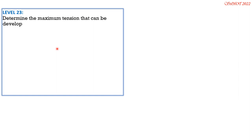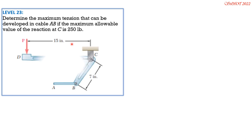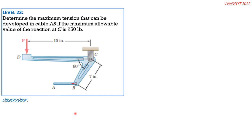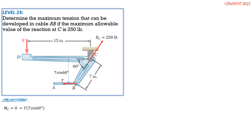Determine the maximum tension that can be developed in cable AB if the maximum allowable reaction at C is 250 pounds. Let the tension in AB be T. The distance shown is 7 sin 30°. The magnitude of the reaction at C is limited to 250 pounds. Setting moment at C equal to zero, clockwise positive: T × 7 sin 60° minus P × 15 = 0. From this, P can be expressed in terms of T.